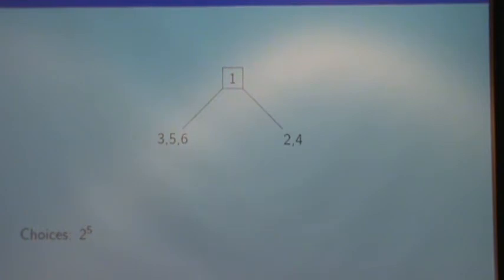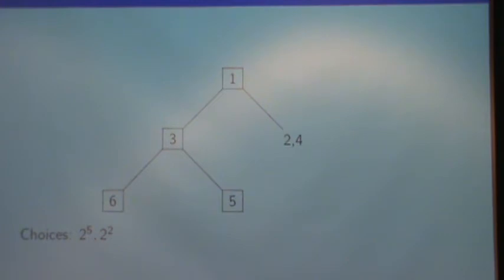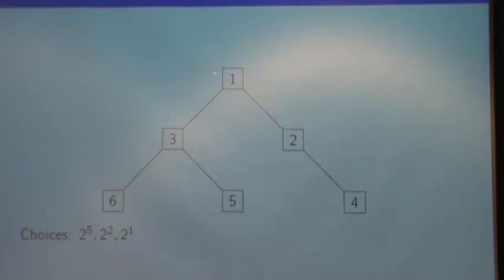So, here's an example of how our algorithm would work in the modified form. I'll construct a binary tree on six vertices. Now, the 1 had to go to the root, and we had 2 to the 5th choices as to where to partition the other five vertices. The 3 in this tree had to go to the root, and we had 2 squared choices as to where to put the other two. And here, the 2 had to go to the root, and we had 2 choices as to where to put the 4. So, the product is 2 to the 5th times 2 squared times 2, which is 2 to the 6 minus 1, times 2 to the 3 minus 1, times 2 to the 2 minus 1.